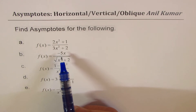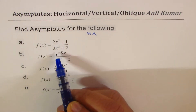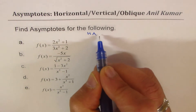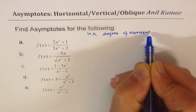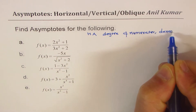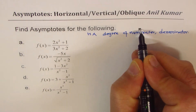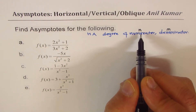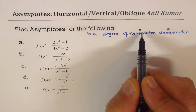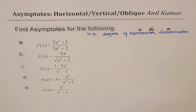Let's discuss horizontal asymptote first. For finding horizontal asymptote we are checking the degree of numerator and denominator. Let us say degree of numerator is n and for denominator is m. We have a horizontal asymptote only if the degree of numerator is less than or equal to that of the denominator.